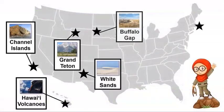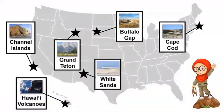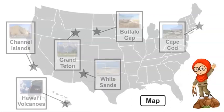Welcome back. Look at this map of all the national parks we visited in our last lesson. A map is a flat model of Earth's surface and features as seen from above. I love maps. Let's look at another one.